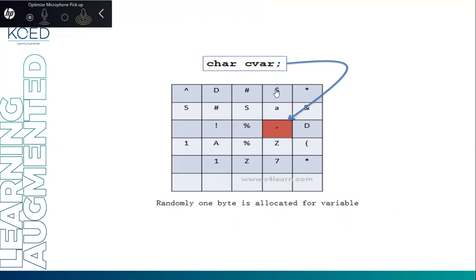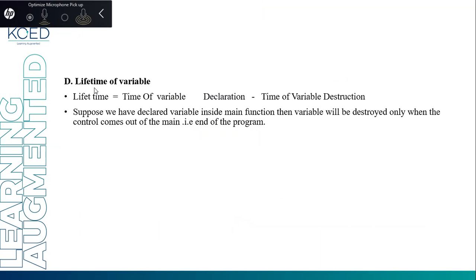When a variable is declared and memory is allocated, the variable is stored in the memory. Randomly, memory is allocated for the variable. Lifetime of the variable is known as the time of variable declaration minus the time of variable destruction. Suppose we have declared a variable inside the main function — the variable will be destroyed only when control comes out of the main, that means at the end of the program. For any function, if you declare a variable inside the function, it will execute until the control is inside the function. When control comes out, the variable will get destroyed. That is known as the lifetime of the variable.